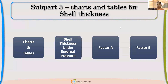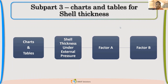Subpart 3 talks about external pressure calculations. When we do external pressure calculations, we need to refer to certain graphs like Figure G, which we call the geometrical chart because it depends upon the geometry of the shell. The geometrical chart G uses two ratios: L/D and D0/t, where D0 is outside diameter divided by thickness. Based on these terms, we try to find out Factor A.